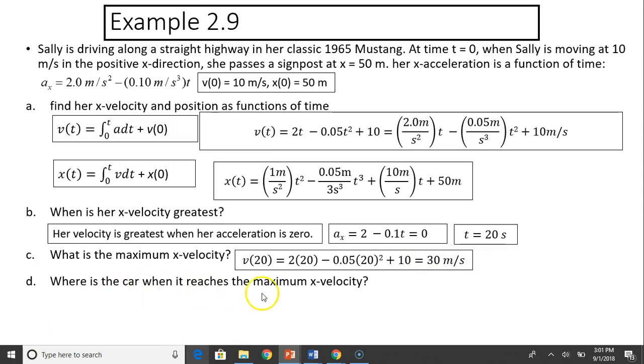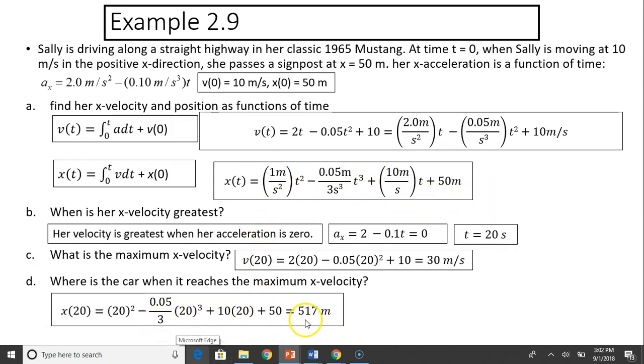Where is the car when it reaches the maximum velocity? To find the position, you simply plug in t equals 20 seconds into position function, which is this one. x(t) equals t² minus 0.05/3 t³ and so forth. So you plug t equals 20. You should have 570 meters.